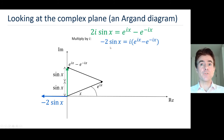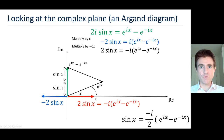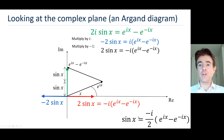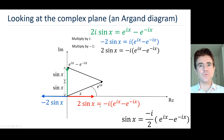We want positive sine x, so we multiply by minus 1, giving 2 sine x equals minus i times e to the ix minus e to the minus ix. That flips the value on the real axis. Rearranging, we get the familiar expression: sine x equals the difference divided by 2i, or equivalently with coefficient minus i divided by 2, whichever is more convenient. The key point is that we end up with a purely real value — sine x — expressed as a difference of two complex numbers.